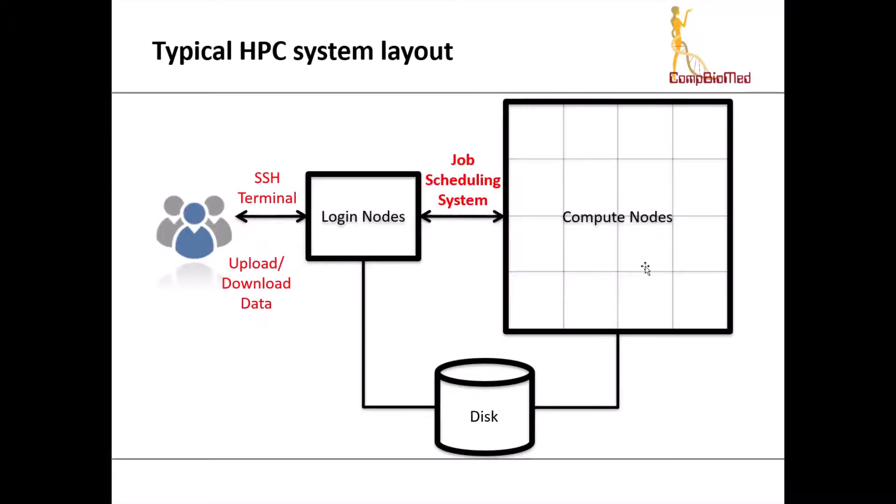And then there are the compute nodes. Like the login nodes, these also have multiple cores. There are many, many more nodes than the login nodes. These nodes are not on the internet and can only be accessed by the login nodes via a job scheduling system, a system we call a batch system. Any serial or parallel applications should be run on these nodes.